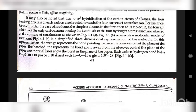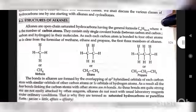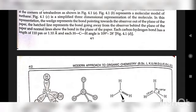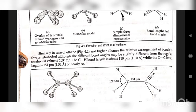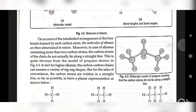A molecular model of methane is a simplified three-dimensional representation of the molecule. In this representation, the wedge represents the bond pointing towards the observer out of the plane of the paper, the hatched line represents the bond going away from the observer behind the plane of the paper, and the normal line shows the bond in the plane of the paper. Each C–H bond has a length of 110 picometers (1.10 Å) and each H–C–H angle is 109°28′.